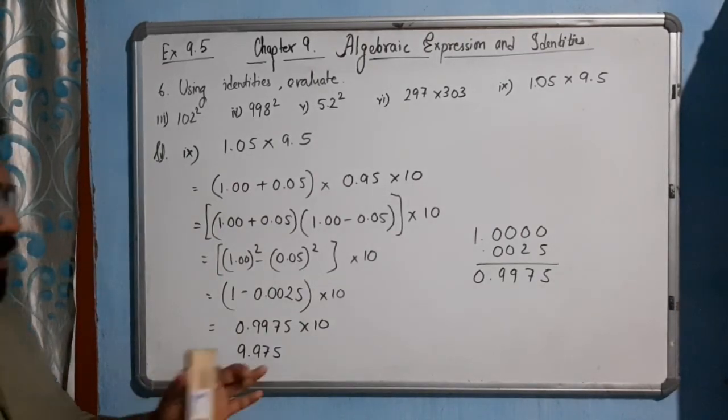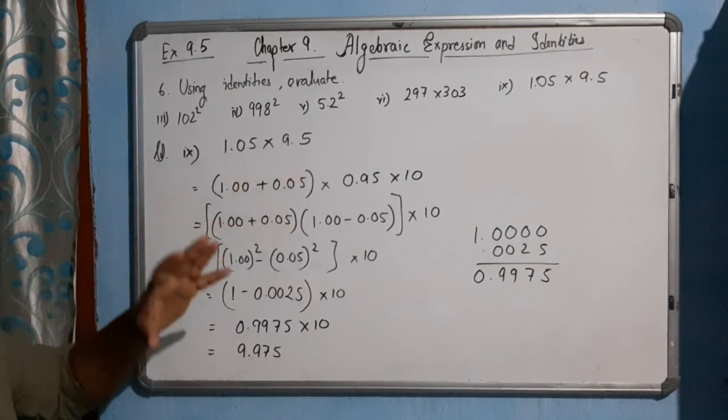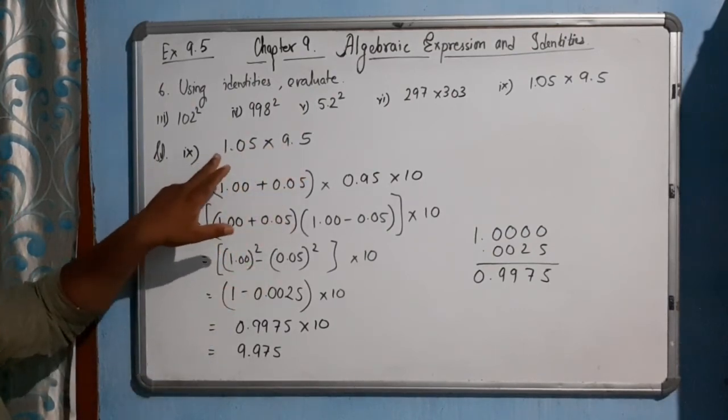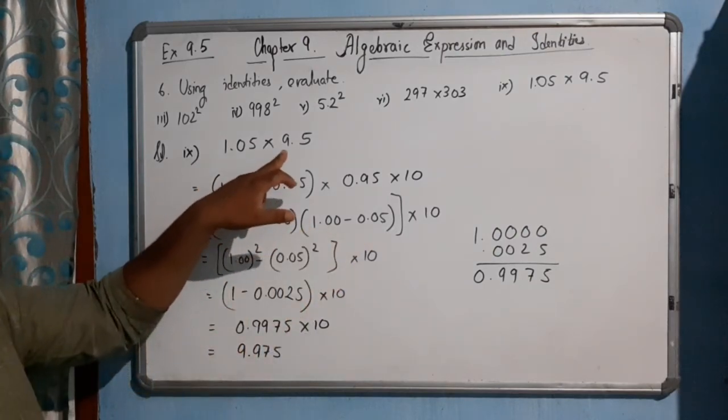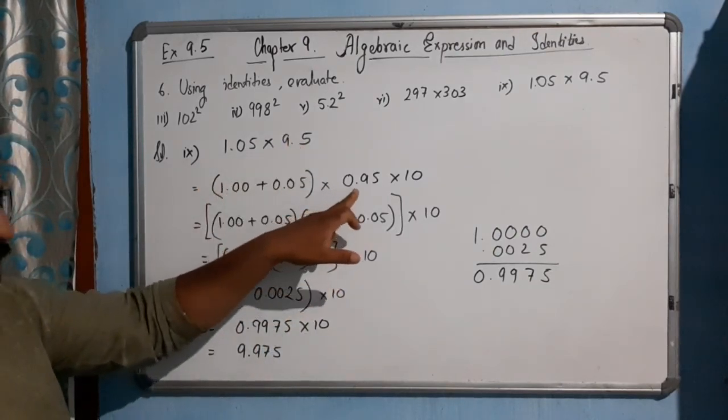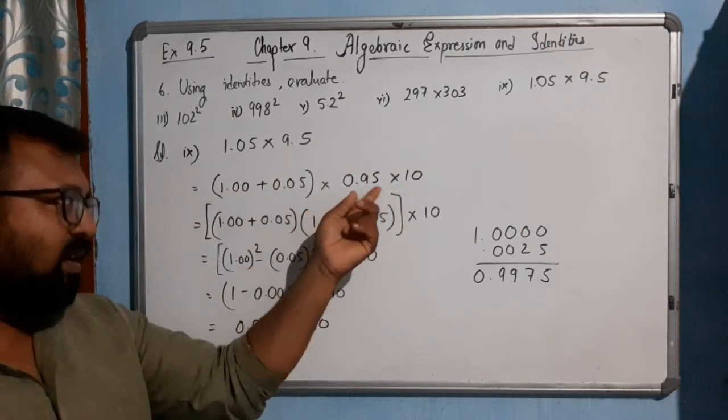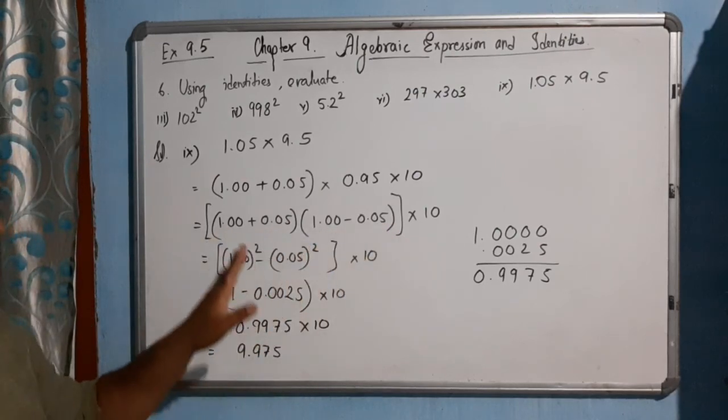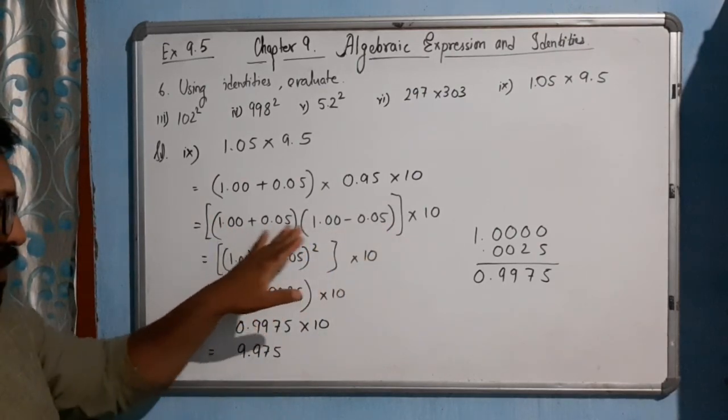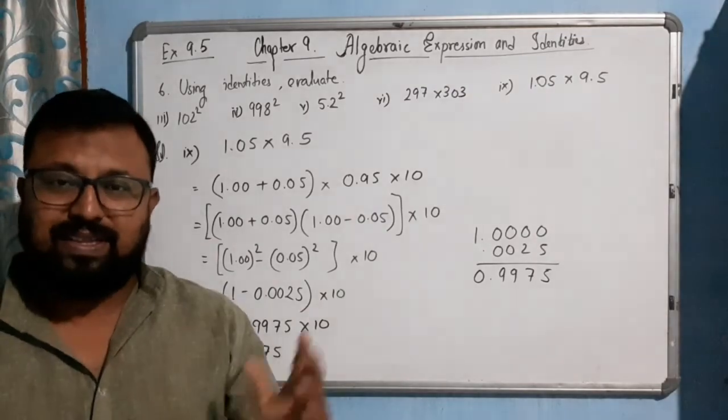So I hope you have understood this part. At first, it looks a little bit critical and complicated. But as we have to make it a plus b into a minus b form, we changed 9.5 into 0.95 into 10. So ultimately, 0.95 can be expressed like 1.00 minus 0.05, just like this one, in a plus b into a minus b form. And ultimately we got 9.975. So I hope you have understood all the examples right now.